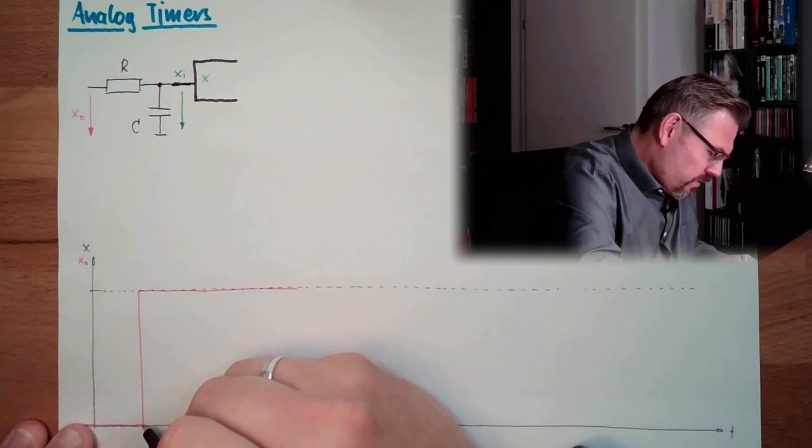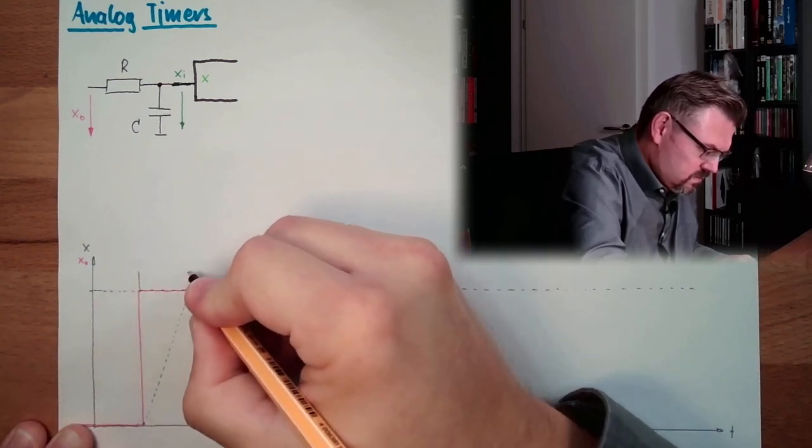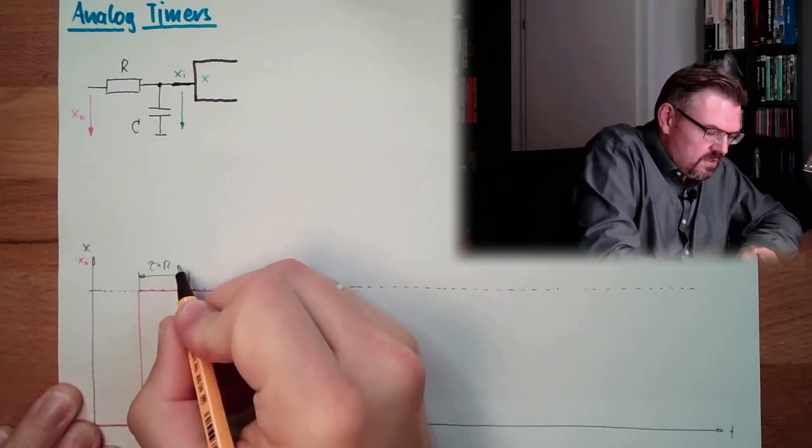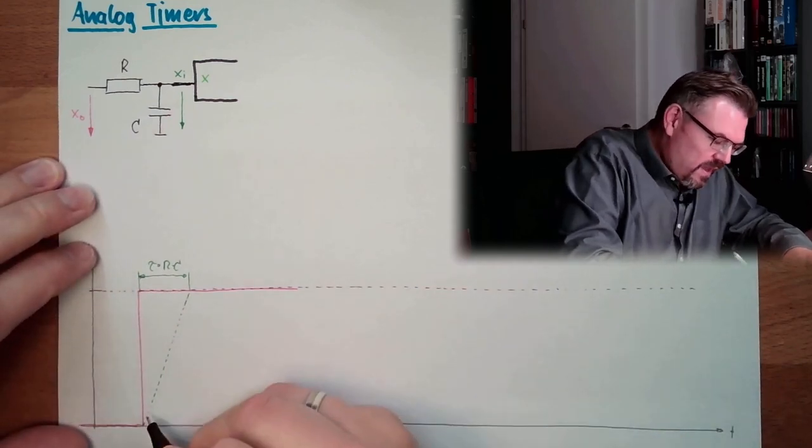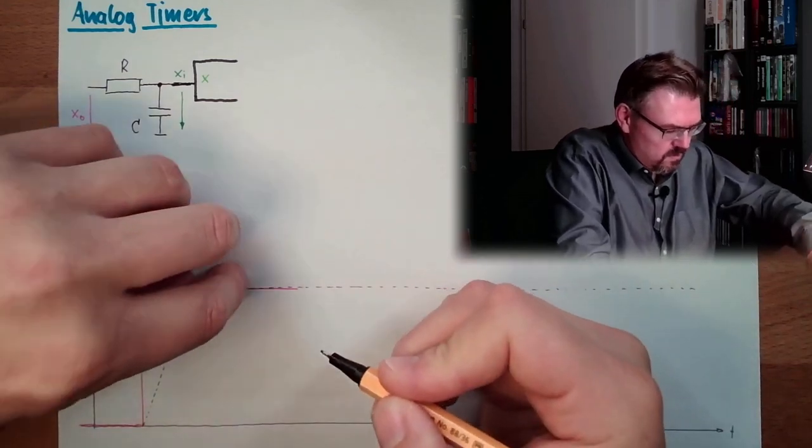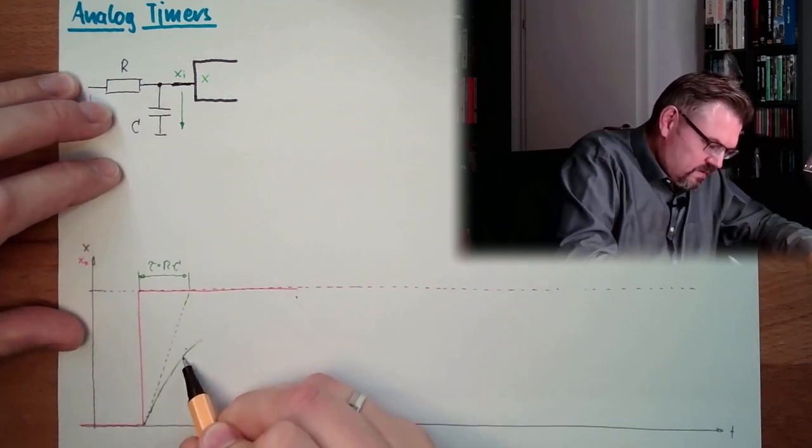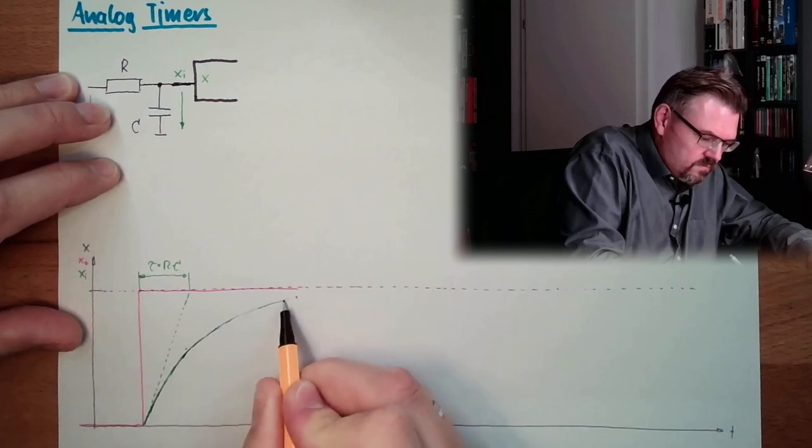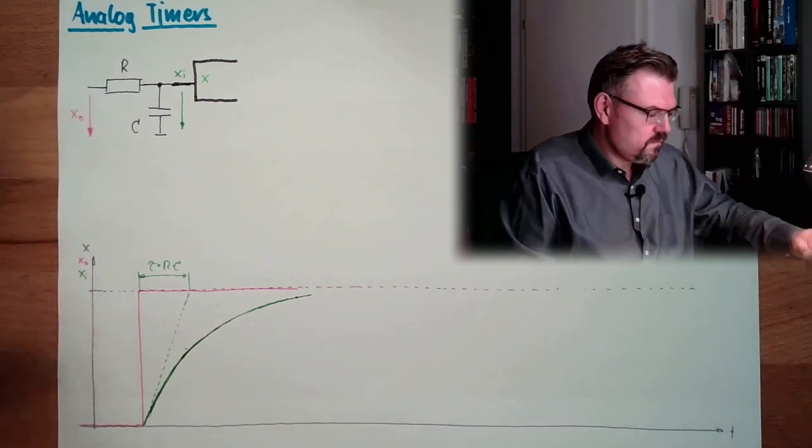So here we have some sort of time constant. This is defined. This is tau equals R dot C. So R in ohm and C in farad gives the time delay or the time. And here we would have this amount. One, two, three, yeah, here. So this will be how XI will look like. All right? Good.